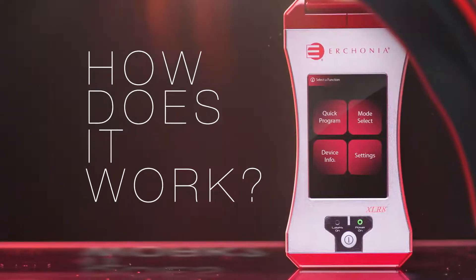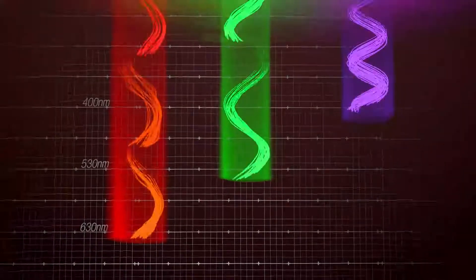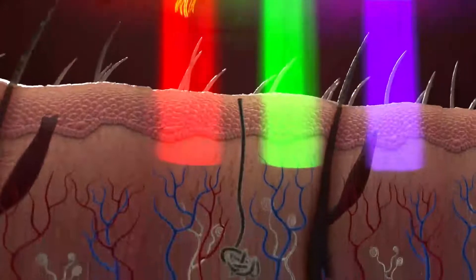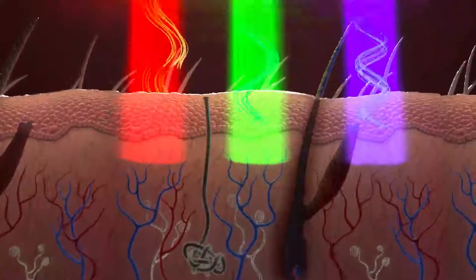Erchonia utilizes different colored lasers, known as wavelengths, to treat a variety of conditions. By applying specific laser colors, you can achieve different drug-like effects, all without harmful side effects presented by prescription medications.